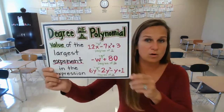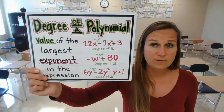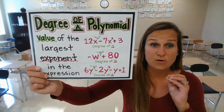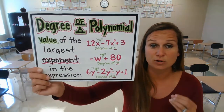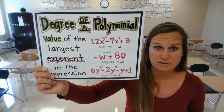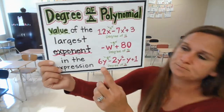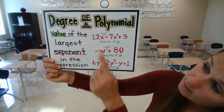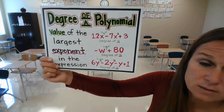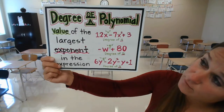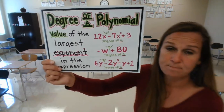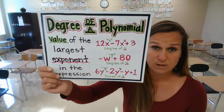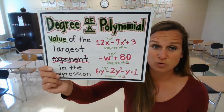Now we have something called the degree of a polynomial. The degree of a polynomial is the value of the largest exponent in the expression — whatever term has the largest exponent, that is the degree of that polynomial. For example, if I have 12x to the fourth minus 7x squared plus 3, the 4 is the largest exponent, so the degree of the polynomial is the fourth degree. This polynomial has three terms, which we said would be called a trinomial.